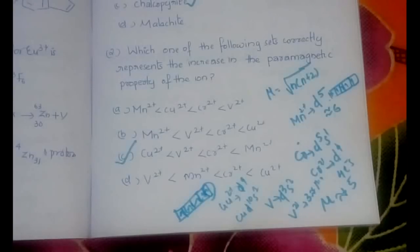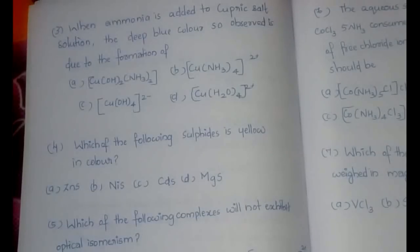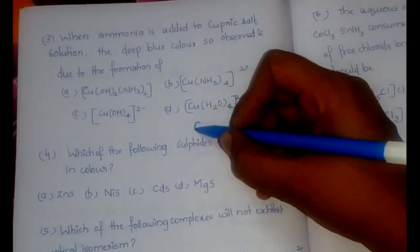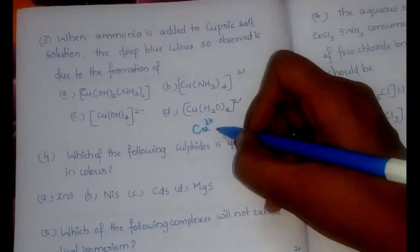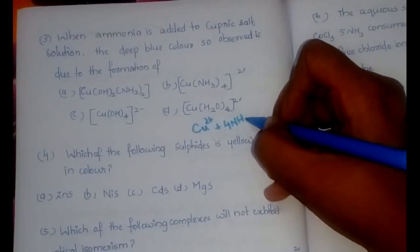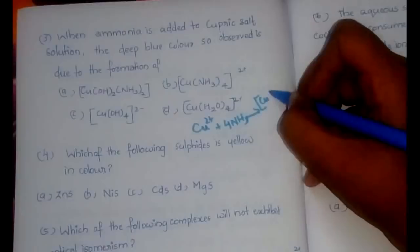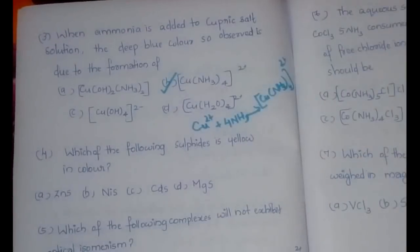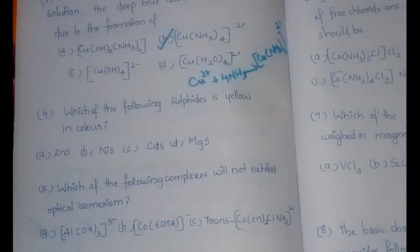The third question: when ammonia is added to a copper sulphate solution, the deep blue color observed is due to the formation of which complex? This is frequently asked and is very important when studying complex formation equilibrium. The reaction is: Cu²⁺ + 4NH₃ → [Cu(NH₃)₄]²⁺. So option B is our answer.